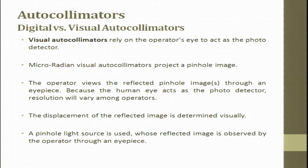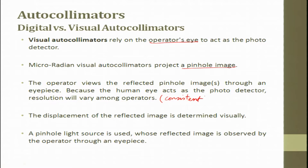The visual autocollimator relies totally on the operator's eye. The micro-radian visual autocollimator projects a pinhole image, and the operator views the reflected pinhole image through an eyepiece. Because the human eye acts as a photodetector, the resolution will vary from operator to operator — it is not consistent. Measurements are in microns or less than microns, or in radians or micro-radians when talking about angular values.